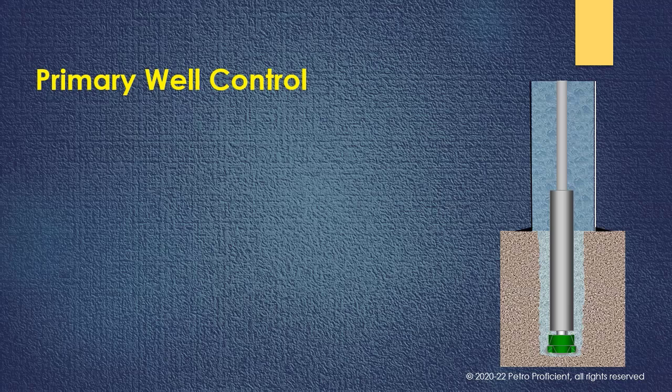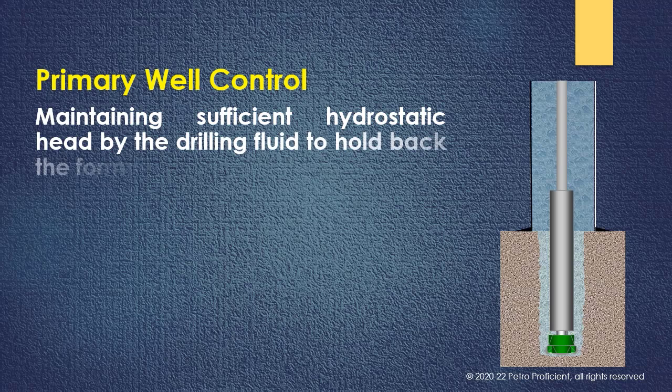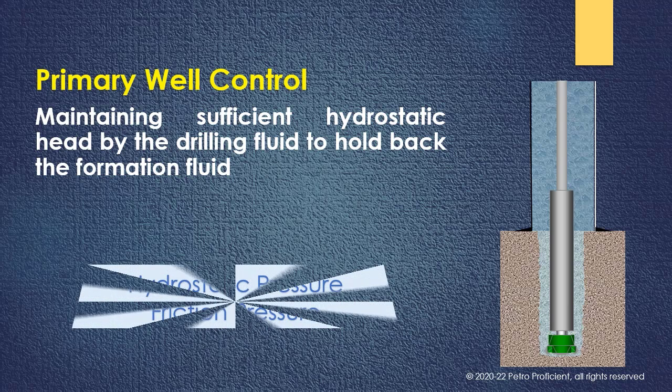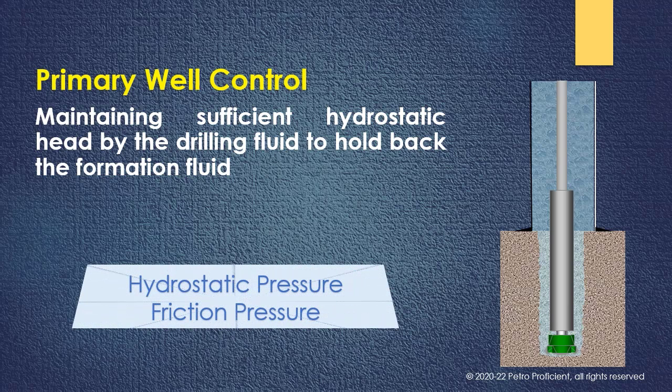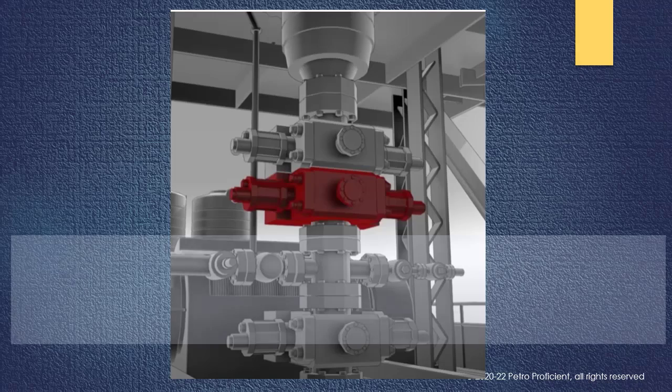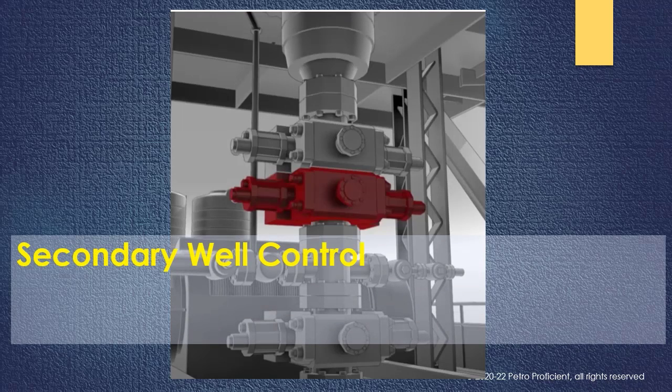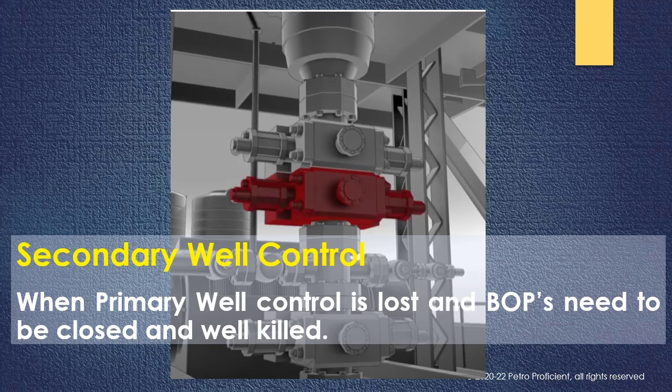Primary well control is maintaining sufficient hydrostatic pressure by the drilling fluid to hold back the formation fluid. When primary well control is lost, the BOP needs to be closed and well killed. This is secondary well control.